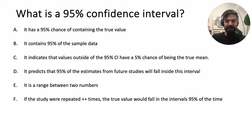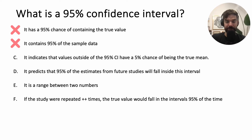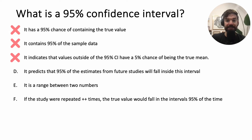What is a 95% confidence interval? We can play a true-false game. It has a 95% chance of containing the true value — false. It contains 95% of the sample data — false. It indicates that values outside the 95% confidence interval have a 5% chance of being the true mean — false. It predicts that 95% of the estimates from future studies will fall inside this interval — false.